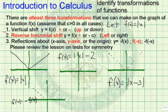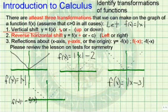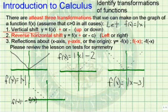The first is a vertical shift. If you have y equals f of x, and if you add, then the whole graph moves up. If you subtract, the whole graph moves down.